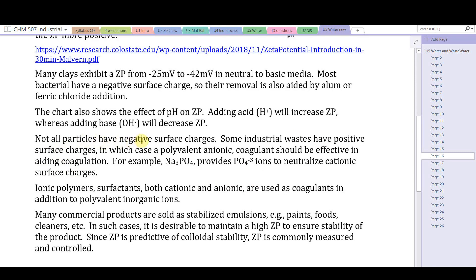Not all particles have negative surface charges. Some industrial wastes have positive surface charges, in which case a polyvalent anion coagulant should be effective in aiding coagulation. For example, sodium phosphate is sometimes used - its high negative charge will neutralize cationic surface charges and aid in coagulation settling. Ionic polymers and surfactants, both cationic and anionic, are used as coagulants in addition to polyvalent inorganic ions.